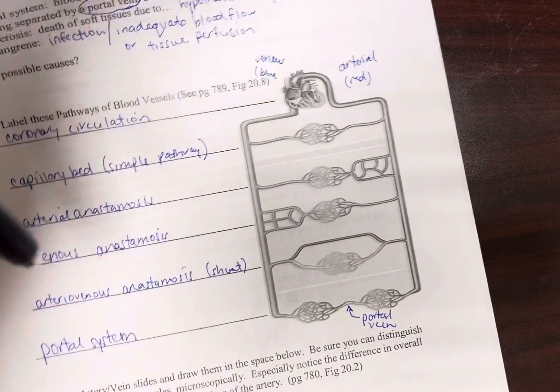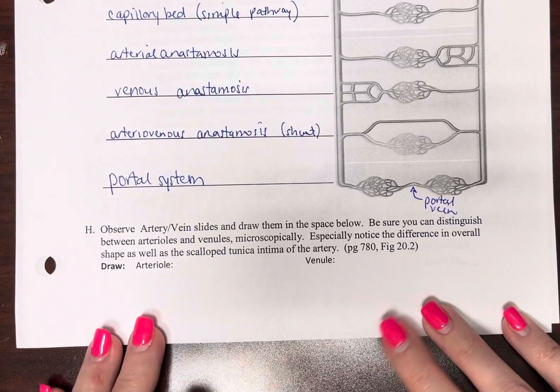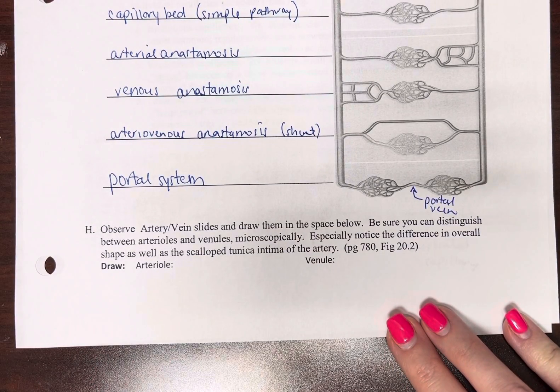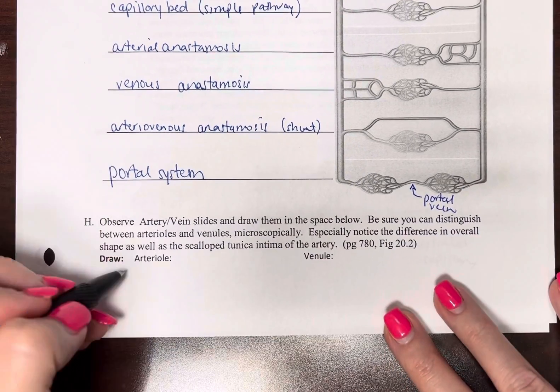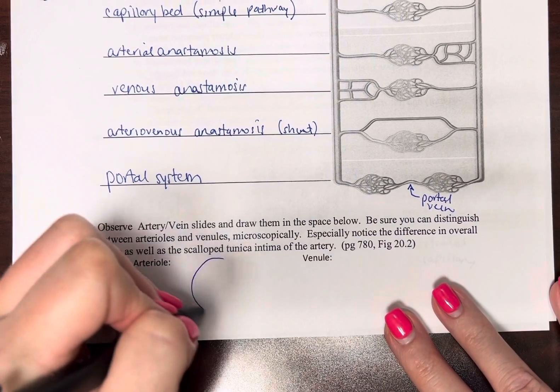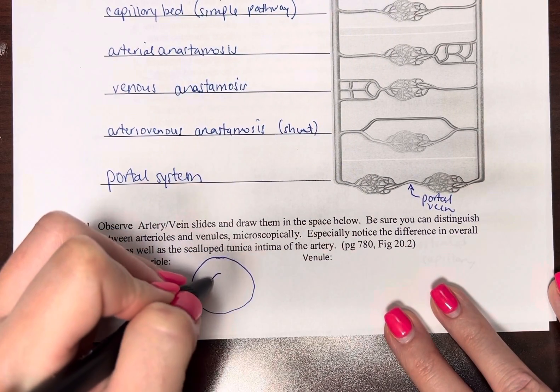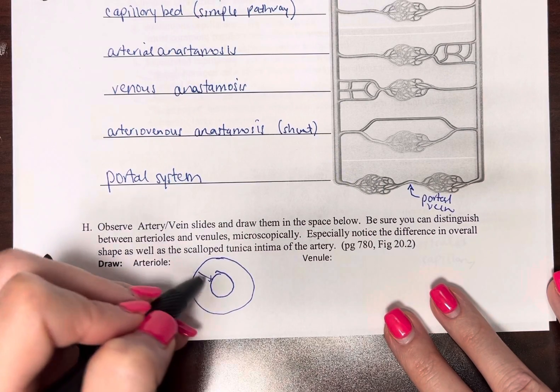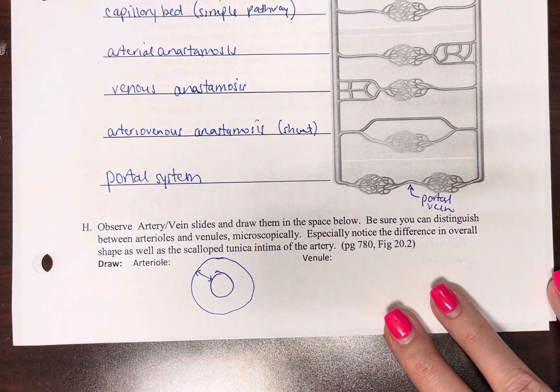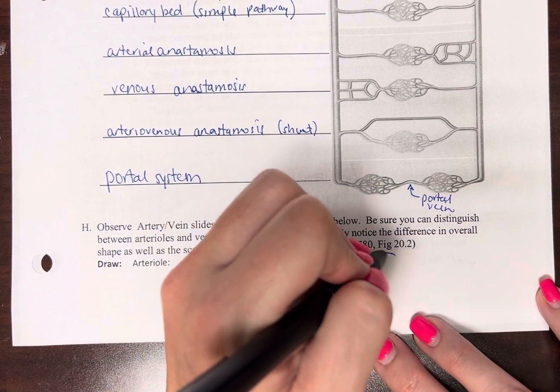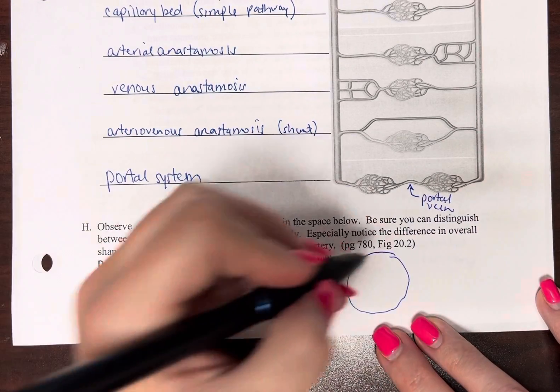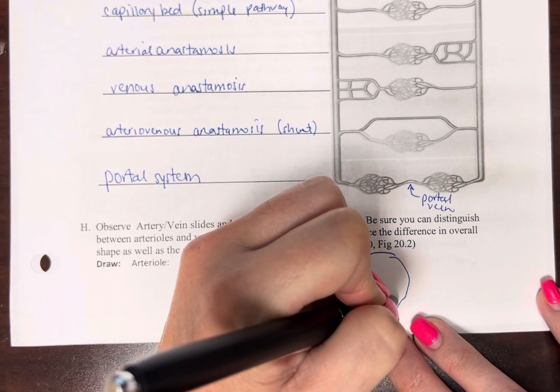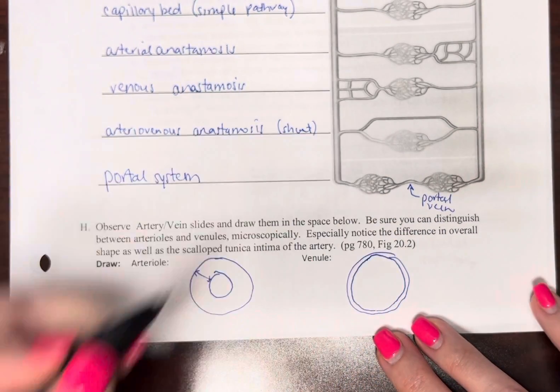Now I'm not going to give you a slide here particularly, but an arteriole is going to look like this. It's going to have a lot more smooth muscle in it. A venule is going to be about the same size with not a lot of smooth muscle, a lot more open space.